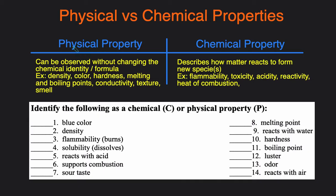So to start, a physical property is a property that you can observe without changing the identity or the formula of the compound or element that you're working with.